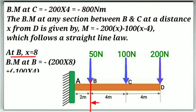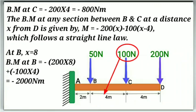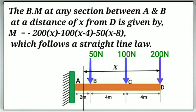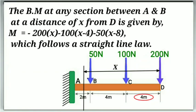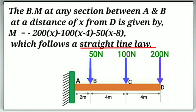At point B, X will be equal to 8, so the bending moment at point B will be equal to minus 200 into 8 minus 100 into 4, equal to minus 2000 Nm. The bending moment at any section between A and B at a distance X from end point D is given by Mx equal to minus 200 into X minus 100 into (X minus 4) minus 50 into (X minus 8), and it follows a straight line law indicating the bending moment diagram between A and B will be a straight line.